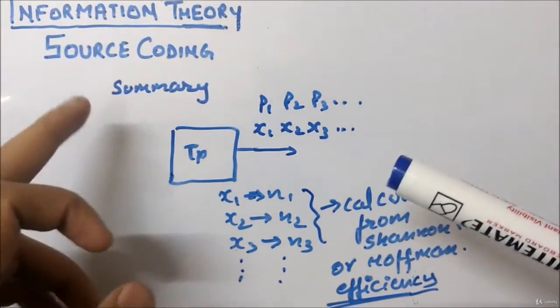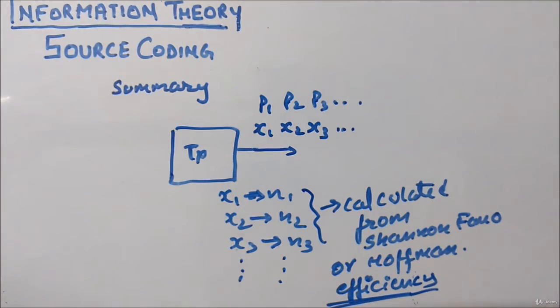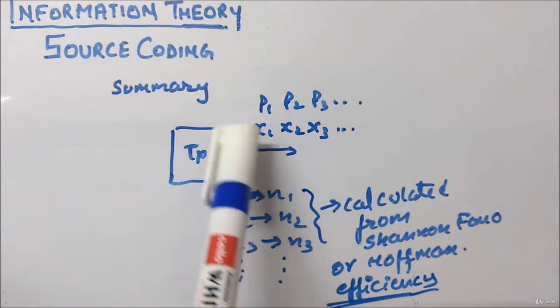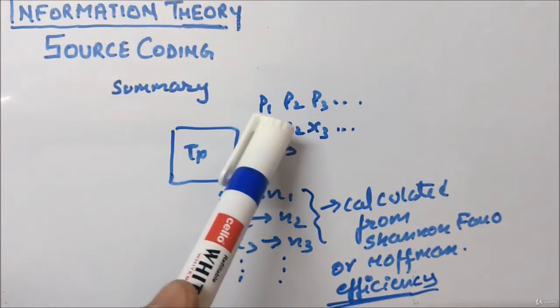The summary of source coding is: you have a transmitter transmitting symbols x1, x2, x3 with their respective probabilities p1, p2, p3.